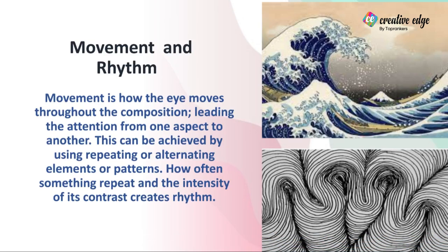Next we have movement and rhythm. Movement is how the eyes move throughout the composition, leading attention from one aspect to another. This can be achieved by using repeating or alternating elements or patterns. Often something repeats and the intensity of its contrast creates rhythm. If we notice waves, we can see movement. In the second image we can see texture and curve lines showing rhythm.